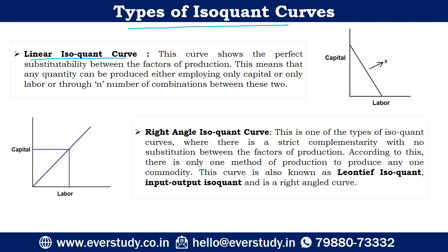Where our isoquant curve intersects the x-axis, capital has been entirely replaced by labor. Similarly, when the curve intersects the y-axis, labor is entirely replaced by capital. So this is an unrealistic approach.